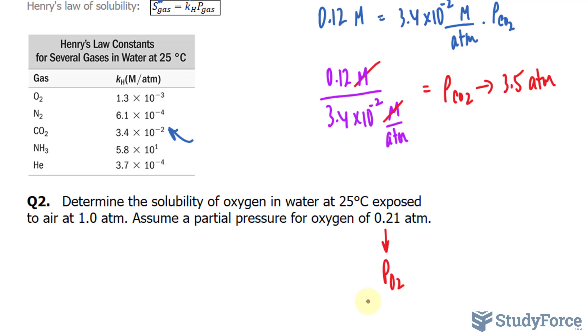and we can find out the constant from this table. It's 1.3 times 10 to the power of negative 3. So using the formula, the solubility of oxygen is equal to this number right here, 1.3 times 10 to the power of negative 3. And feel free to write down the units. They will cancel out eventually, leaving you with molar.